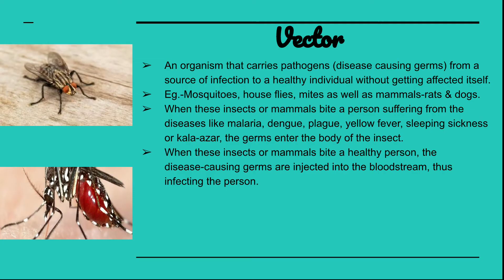A vector is an organism that carries disease-causing germs — that is, pathogens — from a source of infection to a healthy individual, without getting infected itself. For example, mosquitoes such as Anopheles or Aedes carry disease-causing germs from one infected person to another healthy person.